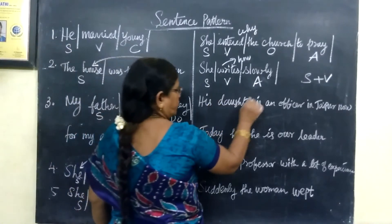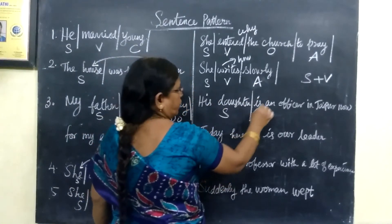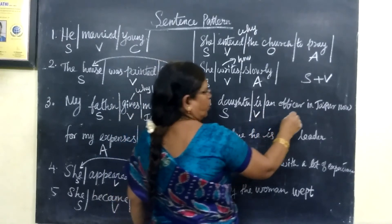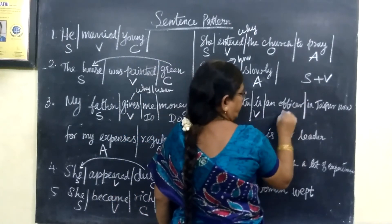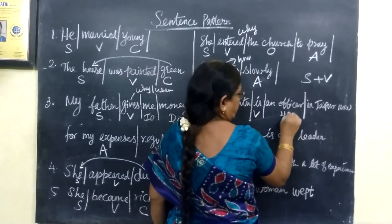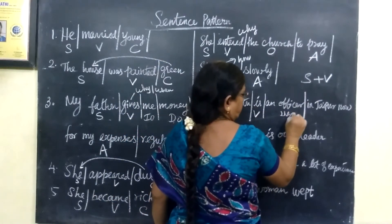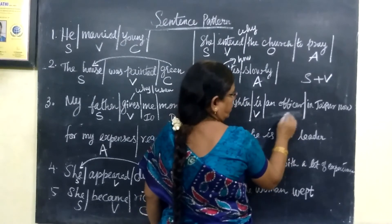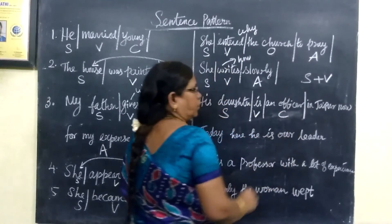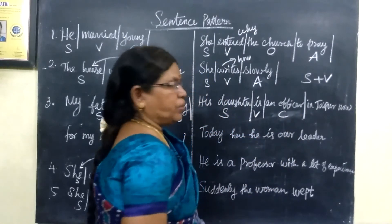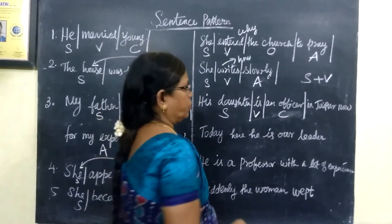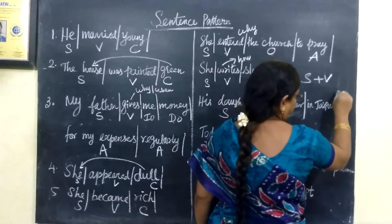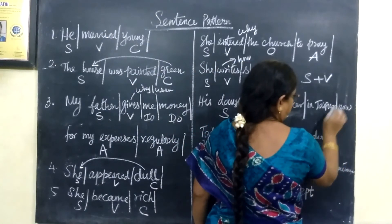His daughter is an officer — 'his daughter' is the subject, 'is' is the verb, and 'officer' is the complement. That is a complement. 'In Jaipur' — a place reference — that is the adjunct. Place refers to an adjunct.